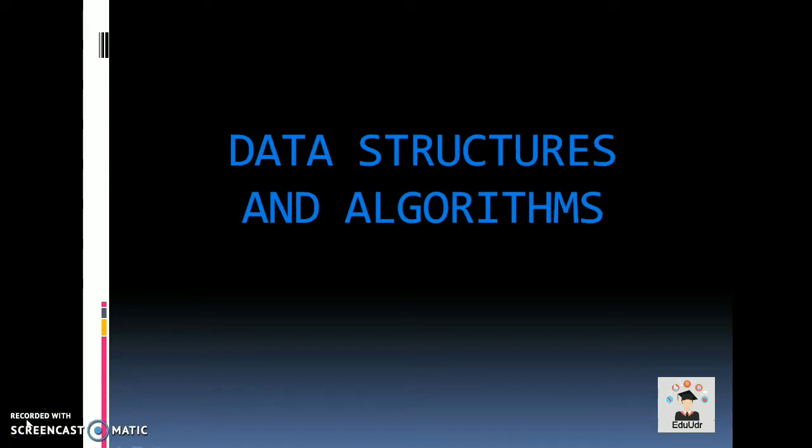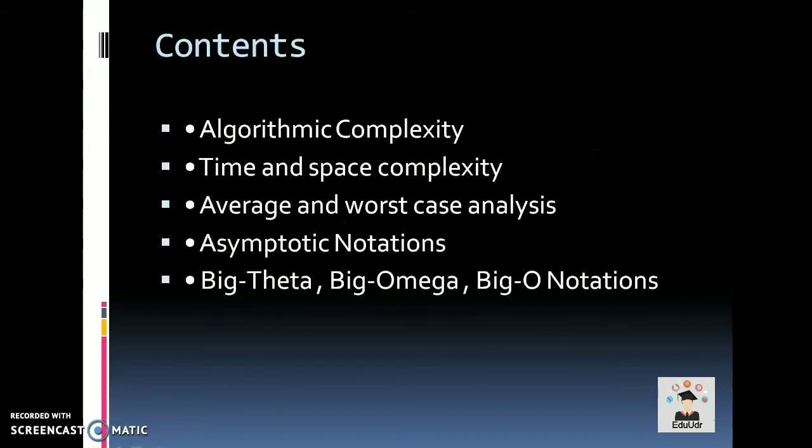Hi friends, I am Nitin from edutr. Today in this video, we will talk about Algorithmic Complexity, Time and Space Complexity, Average and Worst Case Analysis, Asymptotic Notations, Big Theta, Big Omega, and Big O Notations.